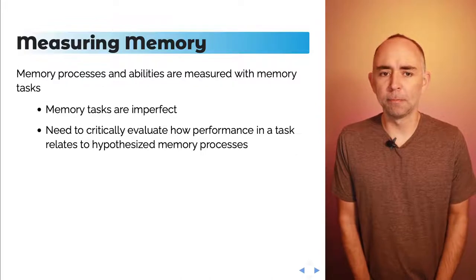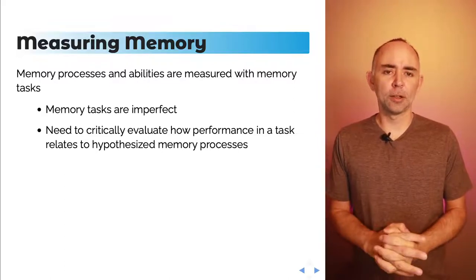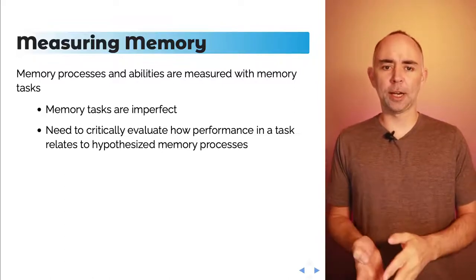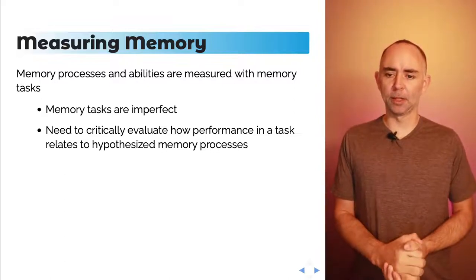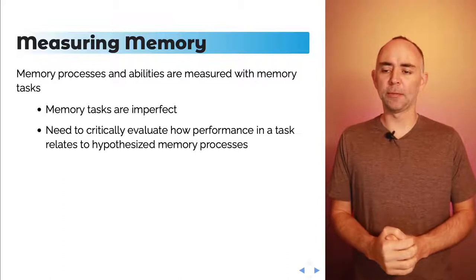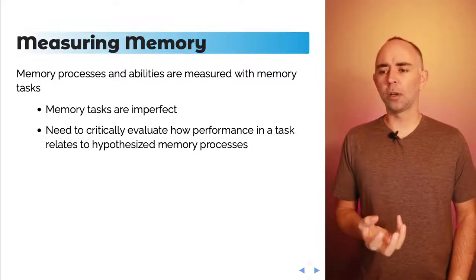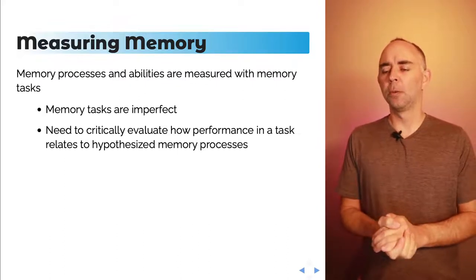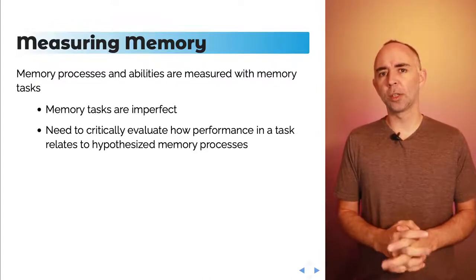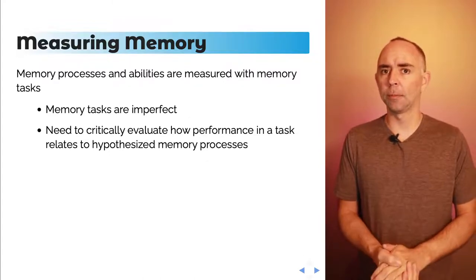Memory processes and abilities are measured with memory tasks. One thing to note is that these tasks are usually imperfect, and we need to critically evaluate how performance in a particular task actually relates to hypothesized memory processes. Unfortunately, we don't have tasks that directly measure the processes of interest, so we have to take our results with a grain of salt. When we get a result from a task involving human or animal memory, we consider the extent to which the result tells us something general about how memory works — or something about how people and animals perform in that particular task.